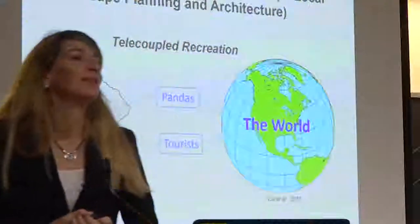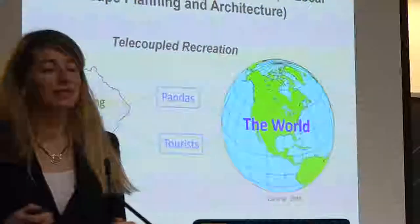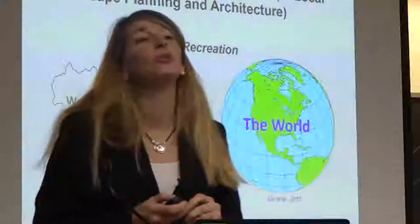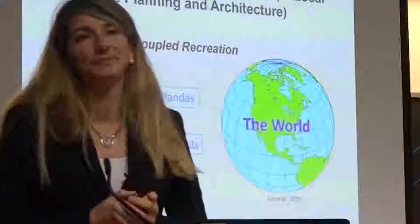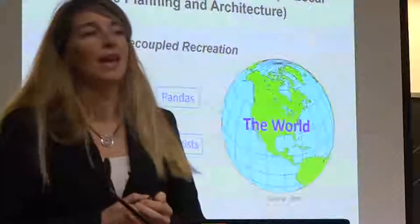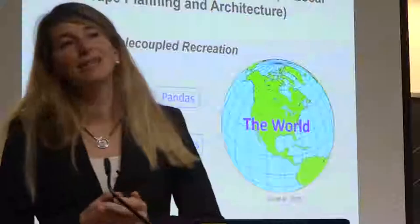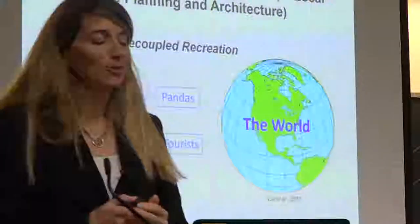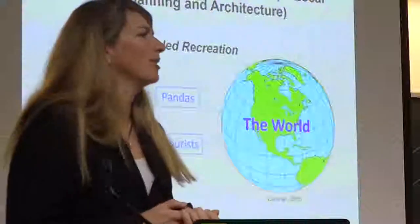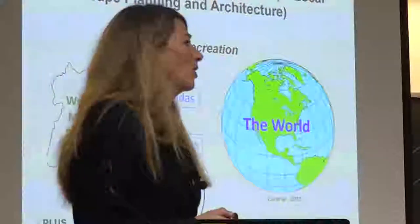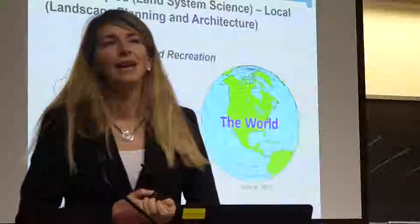So we included knowledge from landscape ecology, codified it to inform the design, and to have a negotiation about this information. The second paradox is about scale. In land system science in the last years, we have been talking a lot about telecoupling.